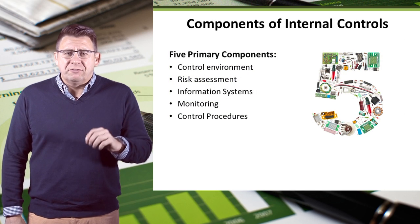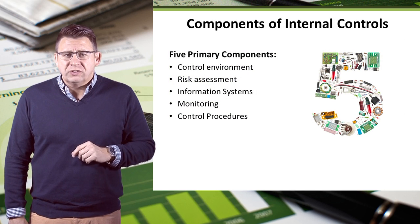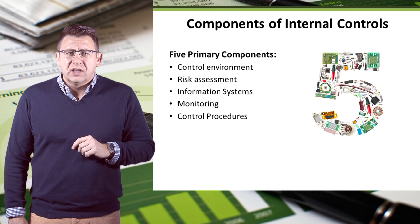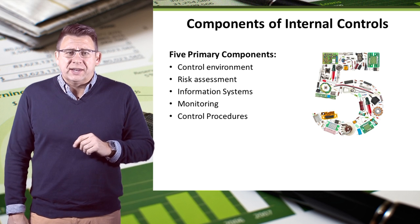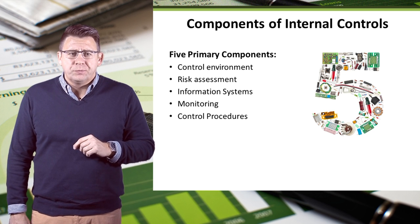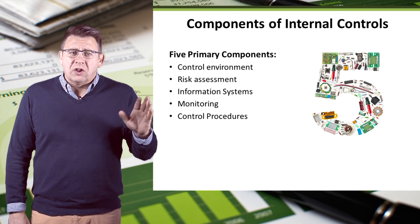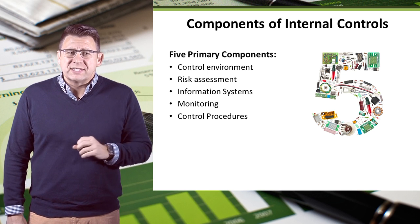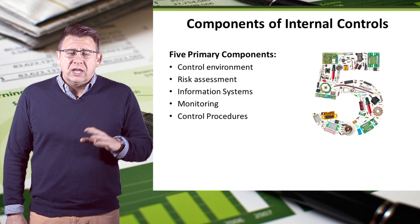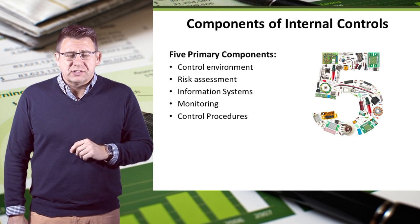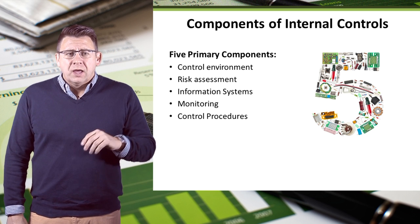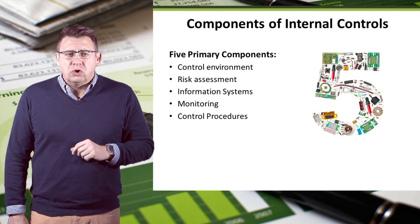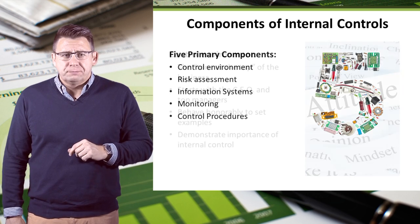Within a plan of internal controls, there are five key components that we need to look at in some detail. They are the control environment, risk assessment, information systems, monitoring, and control procedures.